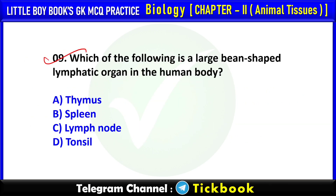Q9. Which of the following is a large bean-shaped lymphatic organ in the human body? Option number B: Spleen.